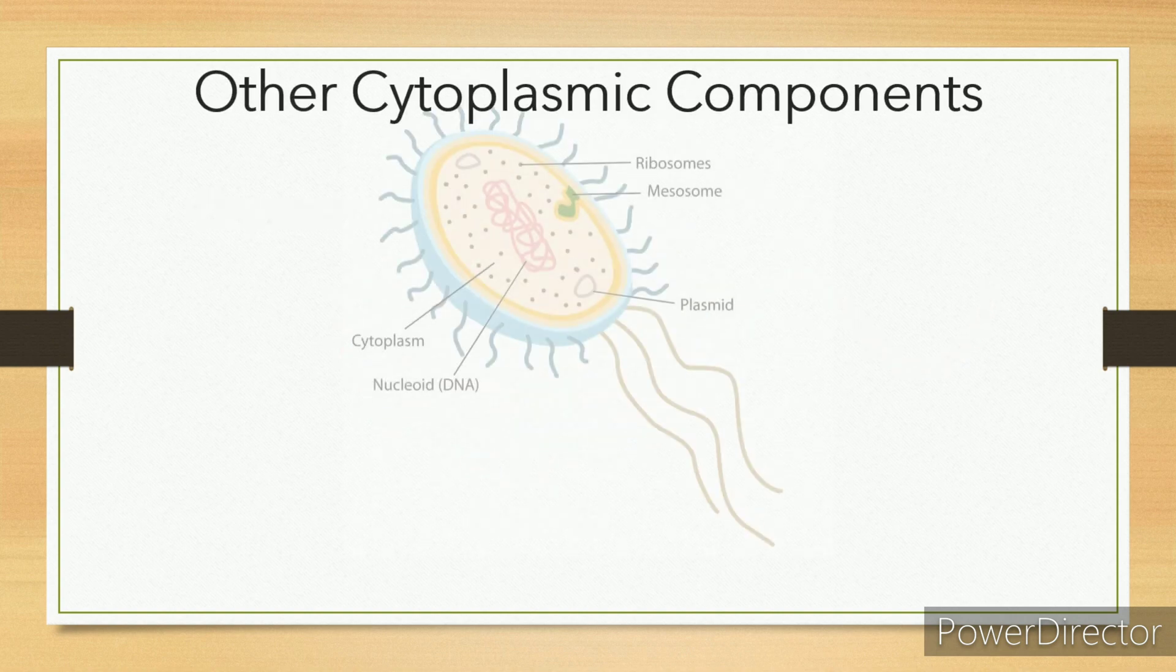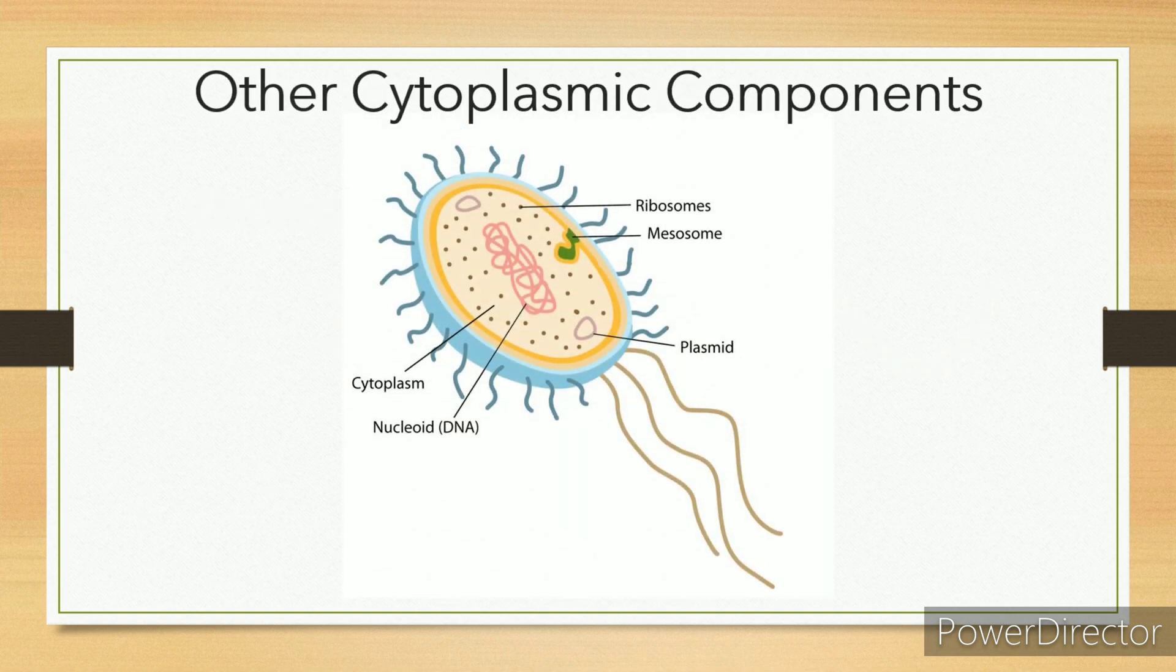Other cytoplasmic components. Ribosomes: protein synthesis. Mesosomes: multilaminate structures formed by invaginations of plasma membrane, principal sites of respiratory enzymes, coordinate nuclear and cytoplasmic divisions during binary fission, more prominent in gram-positive bacteria. Intracytoplasmic inclusions: reserve of energy and phosphate for cell metabolism, for example, metachromatic granules in diphtheria bacilli.